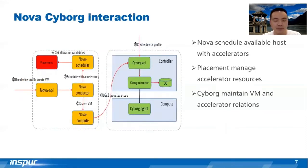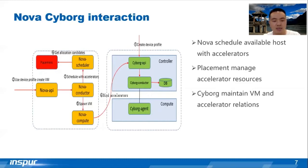In the Ussuri release, we have completed Nova and CYBOG interaction features to support binding accelerator devices when creating a server. The diagram shows an abstract process, and below are the main steps. Firstly, we need to create an accelerated device profile, which can be a pair of accelerator resources or a combination of multiple accelerator resources such as GPU and FPGA. Secondly, we select the device profile to create a server. Thirdly, we get available hosts that satisfy the resource requirements through Nova's Conductor. Then we create a server with accelerators using the device profile.